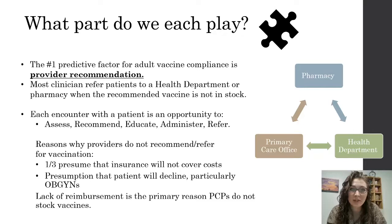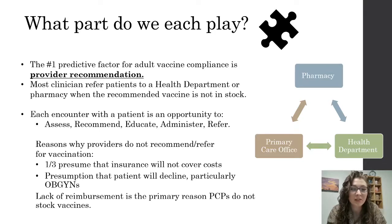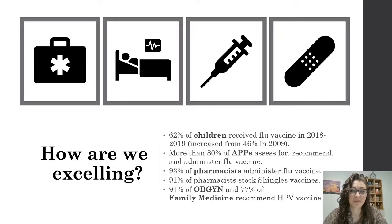Within interprofessional collaboration, the number one predictive factor for adult vaccine compliance is a provider recommendation. That recommendation should be clear and strongly communicated using presumptive rather than conversational language. Most clinicians will refer to a health department or pharmacy when a vaccine is not in stock. Each patient encounter, regardless of facility, is an opportunity to assess immunization status, recommend a needed vaccine, and administer or refer to a clinician who can. Providers often don't recommend or refer for vaccination because they assume insurance won't cover the cost or that their patients will decline. For those who did stock vaccines, lack of reimbursement is the primary reported reason they no longer do.